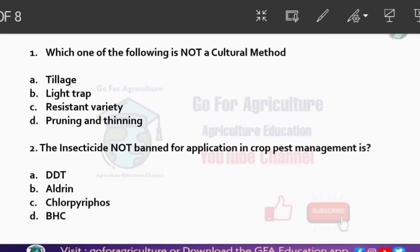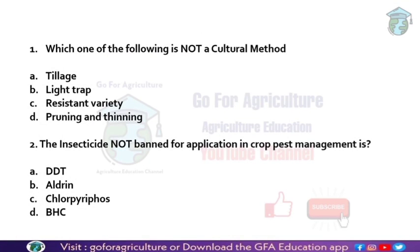First question: which one of the following is not a cultural method? Cultural method basically means crop management practices — intercropping, crop rotation. These are all cultural methods. The answer is 'light trap' because it is not a cultural method. Resistant variety, pruning and thinning are cultural methods, but light trap is used for pest monitoring.